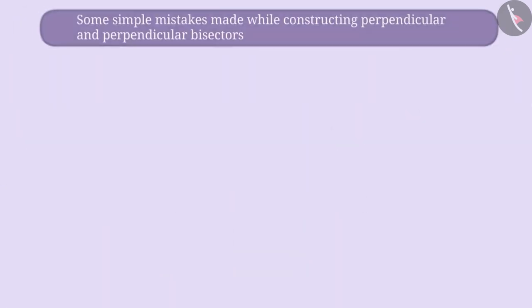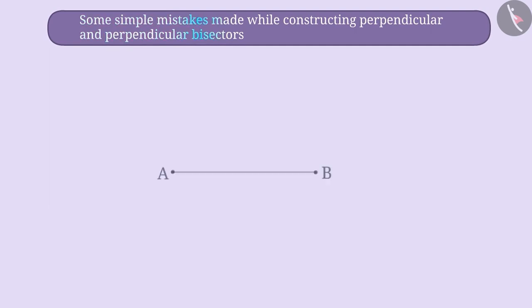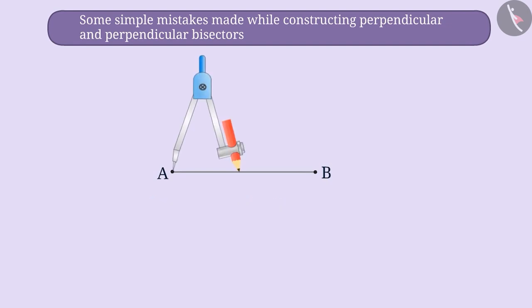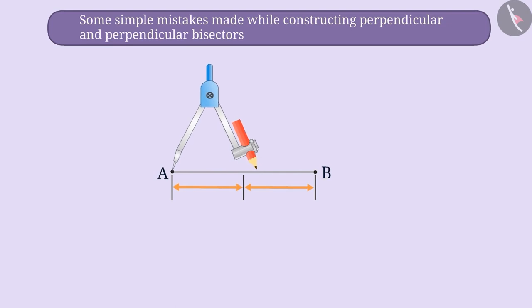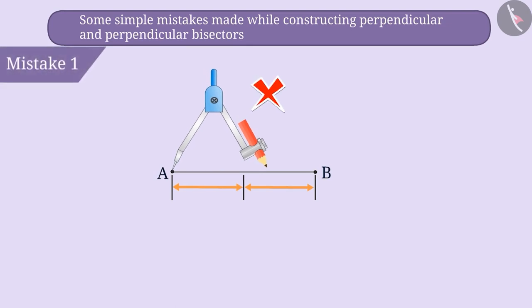Now, let's understand some simple mistakes that are made while constructing a perpendicular and perpendicular bisectors. When students are asked to find the perpendicular bisector of a given line segment AB, they don't consider it important enough to take more than half the length of the line segment in the compass during the construction.